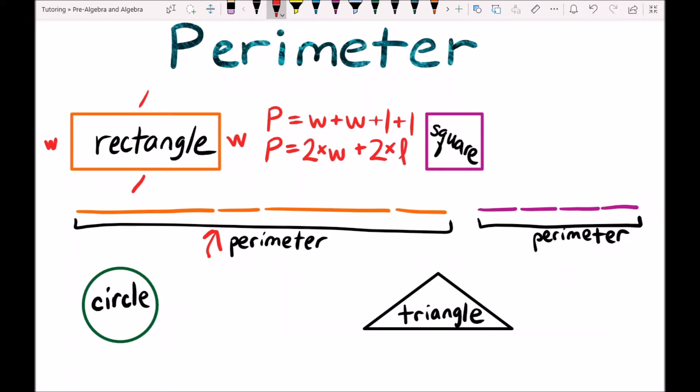And if we know how to distribute and factor, we can say that the perimeter of a rectangle equals 2 times the sum of the width and the length. Because we know that we have two widths and two lengths, so we add the length and the width together and multiply by 2.